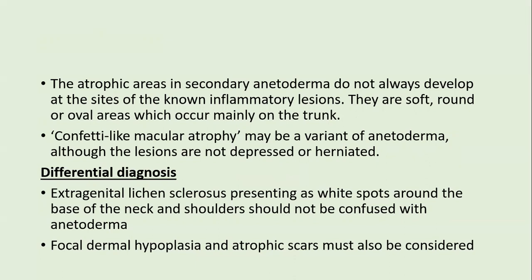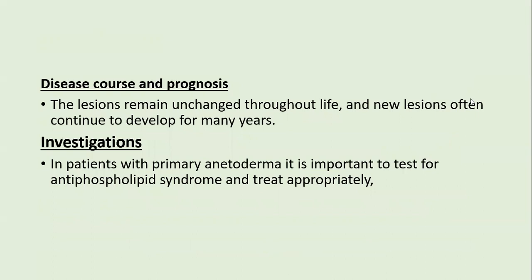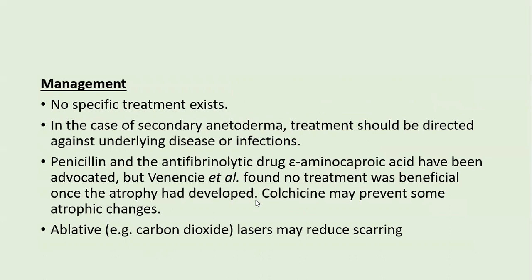Differential diagnosis includes extragenital lichen sclerosus presenting as white spots around the base of the neck and shoulders, focal dermal hypoplasia, and atrophic scars. The disease remains unchanged throughout life, with new lesions often continuing to develop for several years. In patients with primary anetoderma, it is important to test for antiphospholipid syndrome and also order VDRL. No specific treatment exists; in secondary anetoderma, treatment should target the specific disease. Penicillin and antifibrinolytic drugs like alpha-aminocaproic acid are advocated; colchicine may prevent atrophic changes; ablative CO2 laser may reduce scarring.